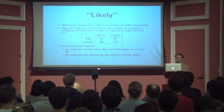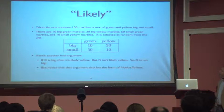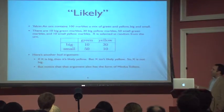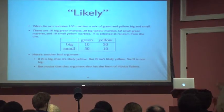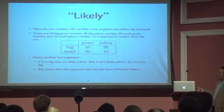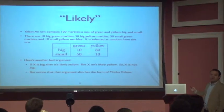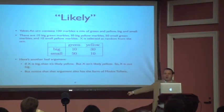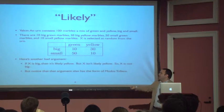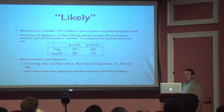Here's another case of a conditional misbehaving by violating modus tollens. This comes from an example by a professor at Berkeley named Seth Yalson. Imagine we have 100 marbles in an urn, a mix of green and yellow, big and small: 10 big green marbles, 30 big yellow marbles, 50 small green marbles, and 10 small yellow marbles. Here's another bad argument: if X is big, then it's likely yellow — because of all 40 big marbles, 30 are yellow. But X isn't likely yellow, since 60 of them are green whereas only 40 are yellow. Therefore, it's not big. That argument shouldn't persuade anyone. But notice it also fits the form of modus tollens.